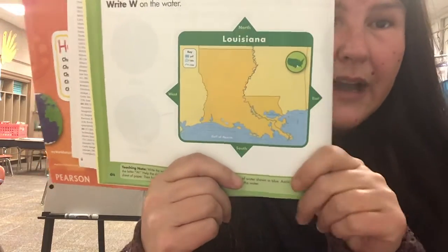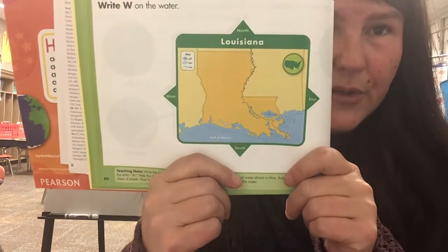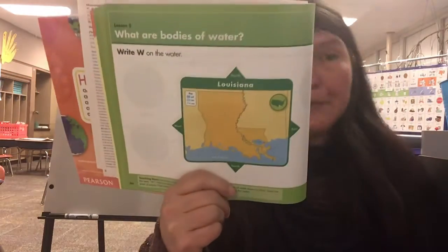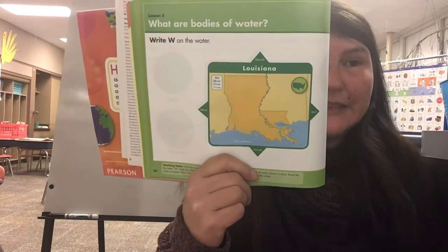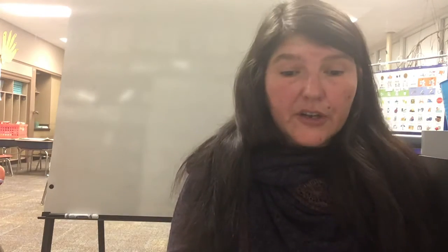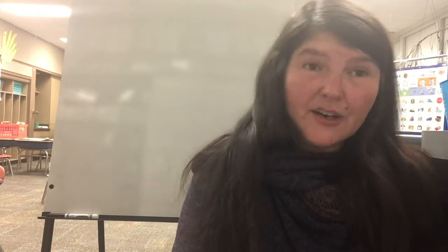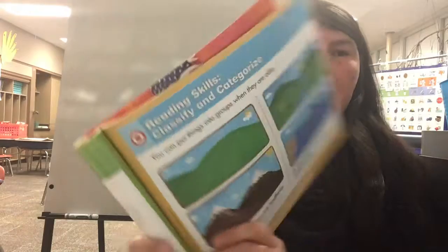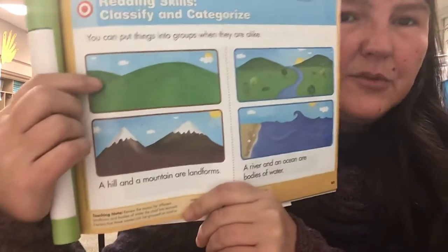Now the Gulf is this area here — write a W anywhere you see water on your map. That's page 64. We're going to go ahead and do page 65.